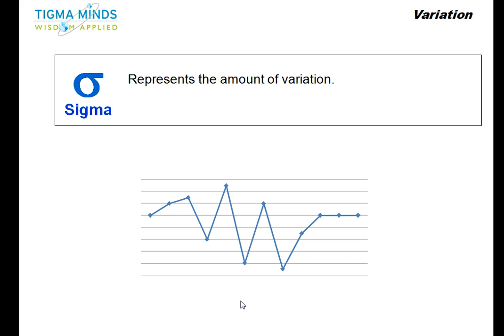That symbol is called Sigma — it's a Greek letter. We'll talk about what exactly variation is, measures of central tendency, and measures of variation. We'll understand how to calculate variation through examples from daily life — examples you can relate to.